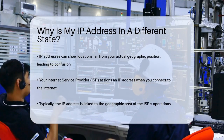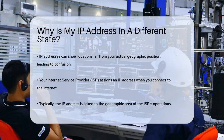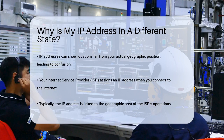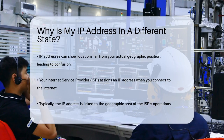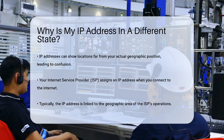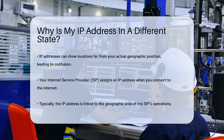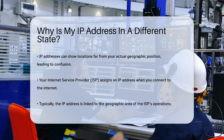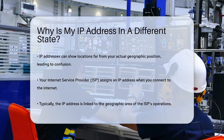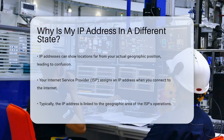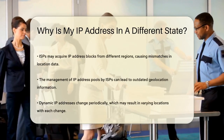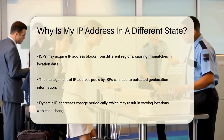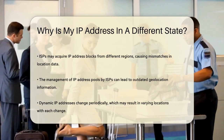When you connect to the internet, your internet service provider, or ISP, assigns you an IP address. This IP address is usually tied to the geographic area where the ISP operates. However, things can get complicated. Sometimes ISPs acquire blocks of IP addresses from other regions, which means that even though you're in one state, your IP address might show up as being in another state because it was previously assigned to someone else in that area.